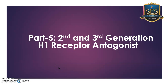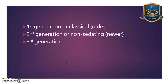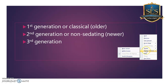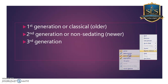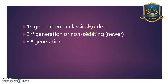Hello, dear students, welcome to this antihistamines series. Today in part 5 we are seeing second and third generation H1 receptor antagonists. In the last lecture, I told you that H1 antihistamines are classified into first generation, second generation, and third generation drugs. We already saw first generation drugs, and one of the major problems with first generation drugs is drowsiness, or sedation.